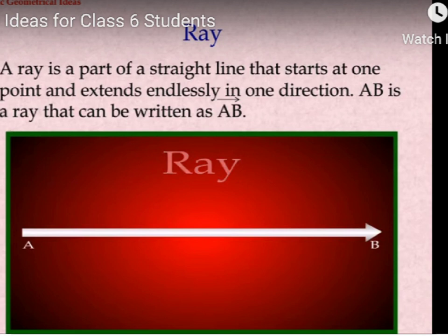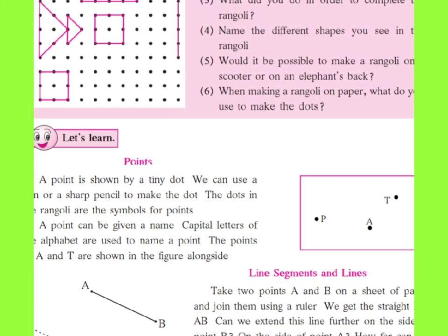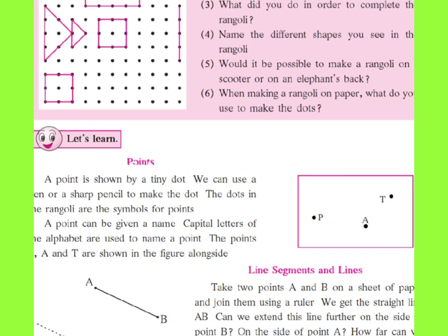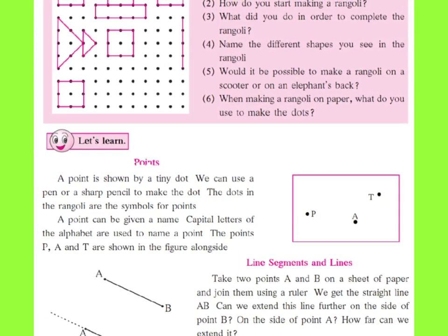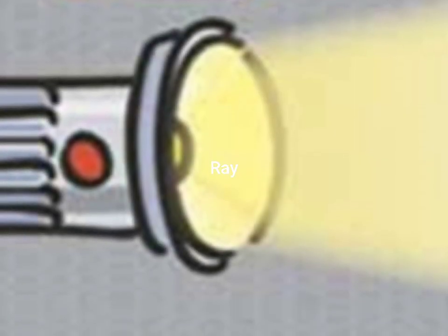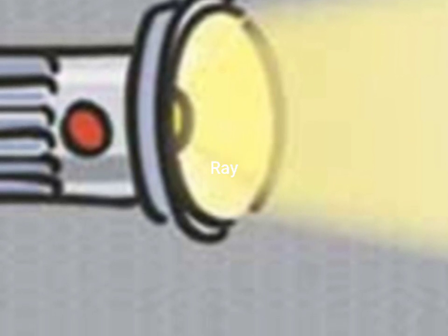Now, let us revise students. First, we have learnt the points. See, in the textbook, you can see the Rangoli points. Then, we have learnt about line segments and line. Just see the example of Ray. It is a torch and light is ghosted. It is the example of Ray.